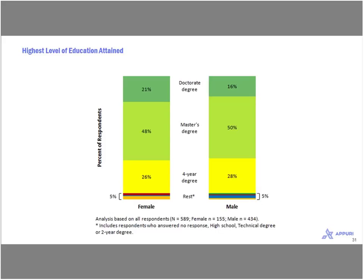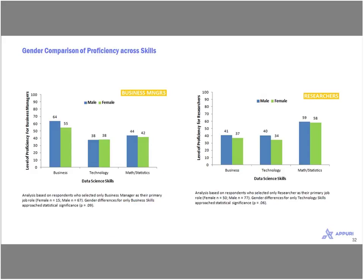Looking at educational attainment for men and women: they're roughly the same — most of the sample had at least a master's degree, with over 65% of respondents having a master's degree or PhD, and almost all had at least a four-year degree. There tends to be no difference between men and women who are practicing data scientists — they have the same degree and the same background. Men and women have roughly the same proficiency in various data science skills for both business managers and researchers, with men having only a slight advantage in some areas that is not statistically significant.